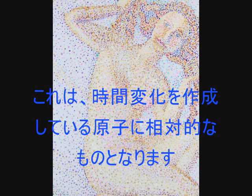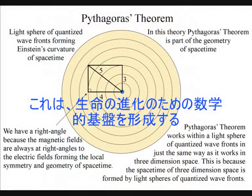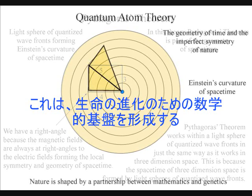The magnetic fields are always at right angles to the electric fields, forming the local spacetime symmetry and geometry that will spiral out, creating the visual and mathematical patterns of our universe.